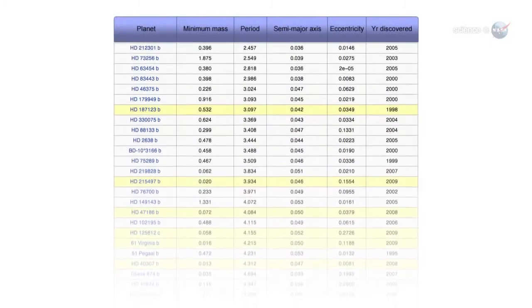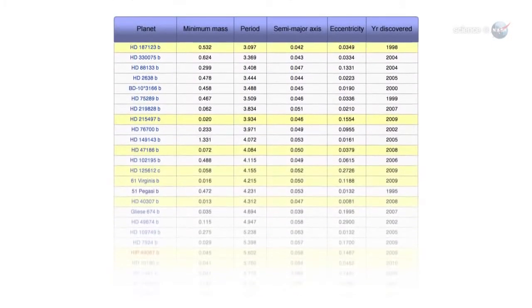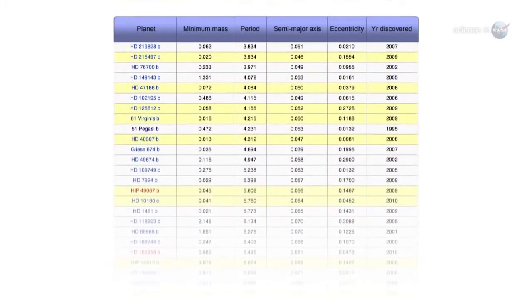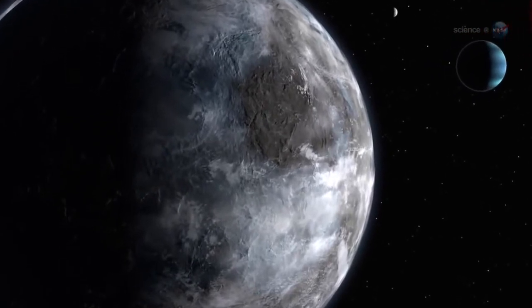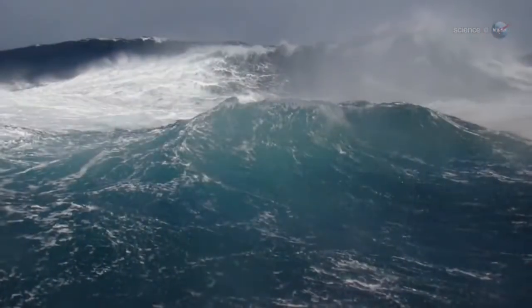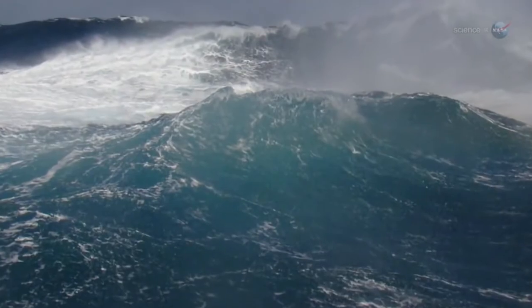As the numbers mount, it seems to be just a matter of time before Kepler finds what astronomers are really looking for: an Earth-like planet orbiting its star in the Goldilocks zone - that is, at just the right distance for liquid water and life.